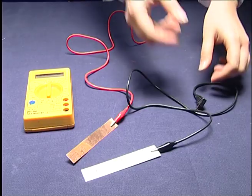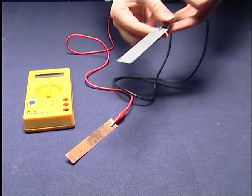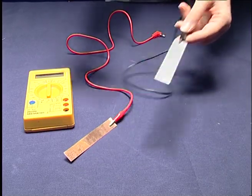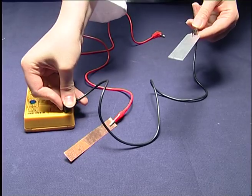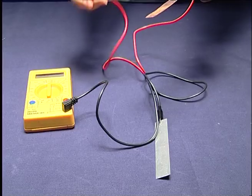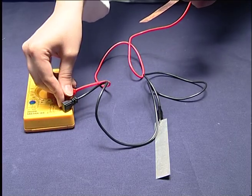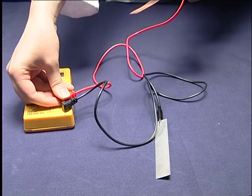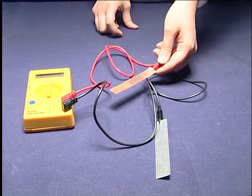Zinc electrode is connected with black wire and it is connected to the black side of multimeter. Copper electrode is connected with red wire and it is connected to the red side of multimeter which is voltmeter input.